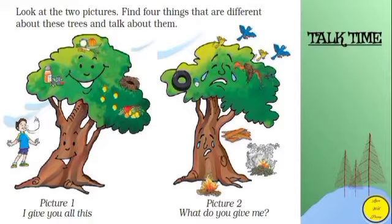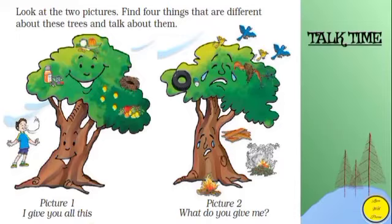So children, in these two pictures you can easily differentiate the feelings of a tree. In the first picture we can see the tree is happy, and in the second picture the tree is unhappy or sad. You can also notice that some birds are flying away from the second tree.